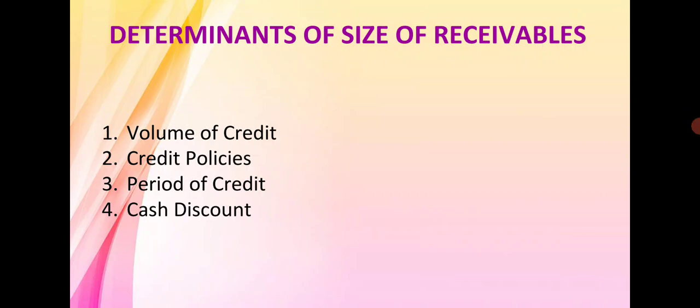The first determinant is volume of credit sales. This is one of the first factors through which the company judges how much credit sales they are going to allow to their customers, in order to increase their market share and to raise their credit policy.